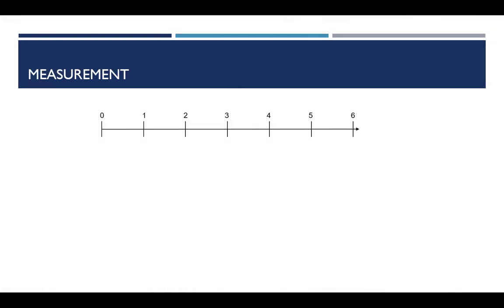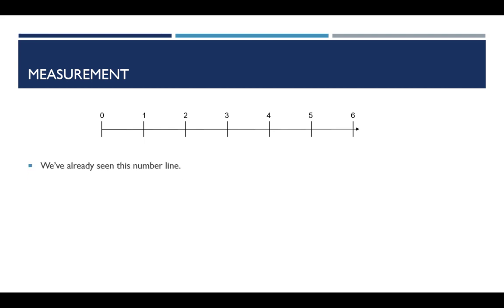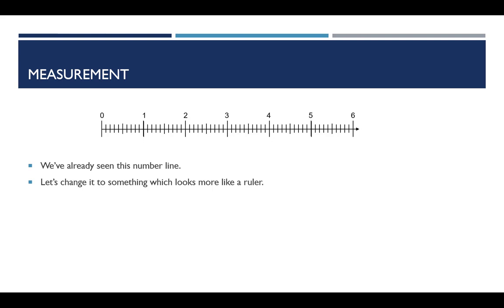Welcome back. This is the second video for experiment one. You've already seen this number line — it was our starting point for looking at measurements in the last video. What I'd like to do is change it up just a little bit and make it look something more like a ruler, and specifically more like the centimeter ruler that we're going to be looking at.